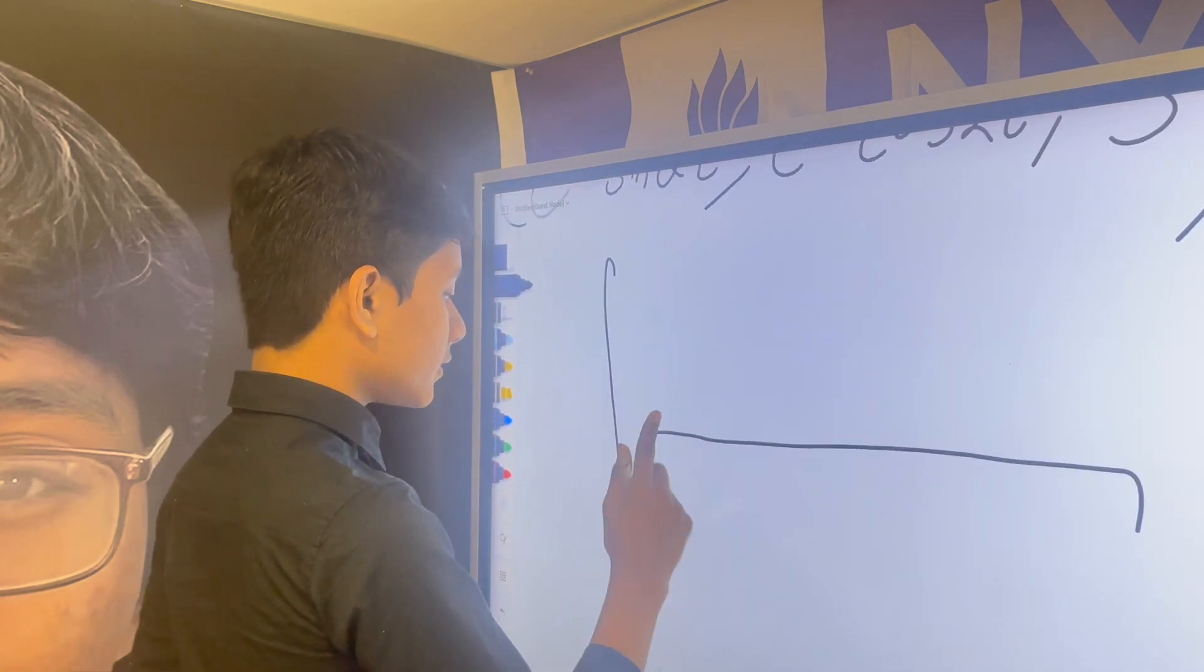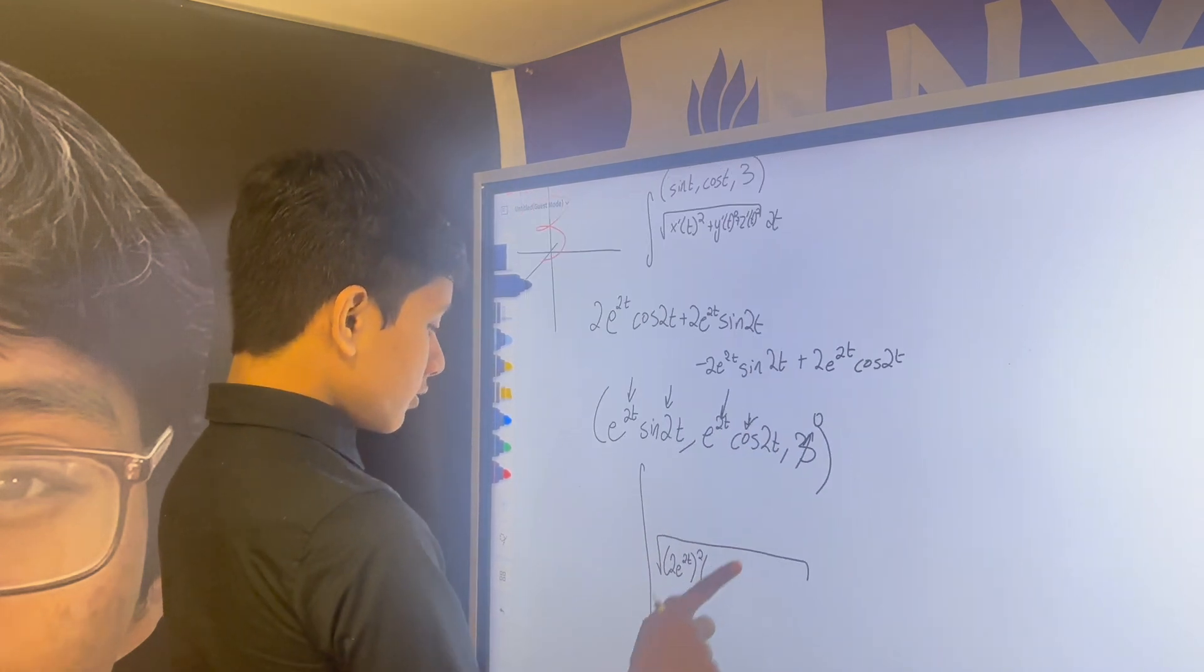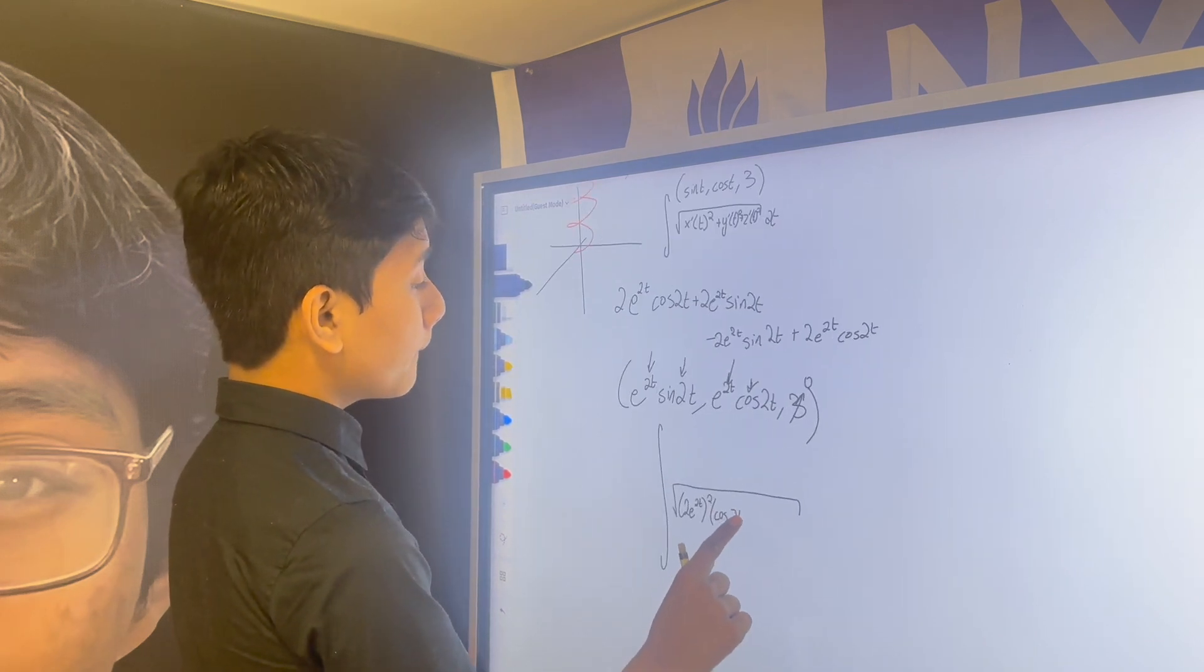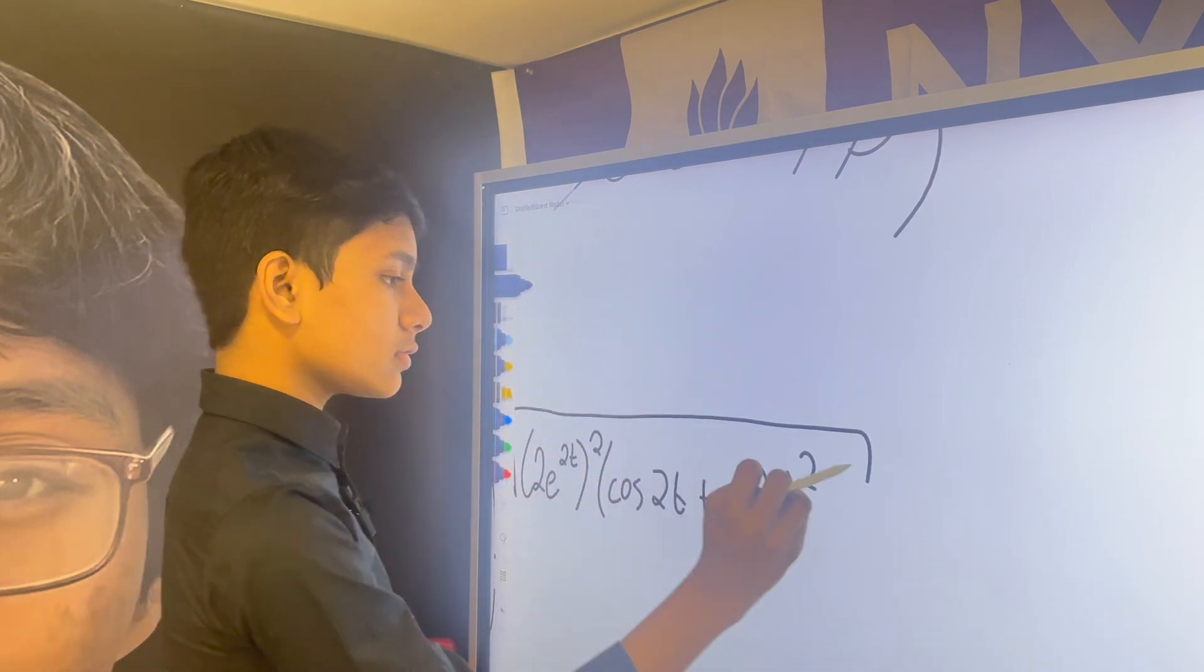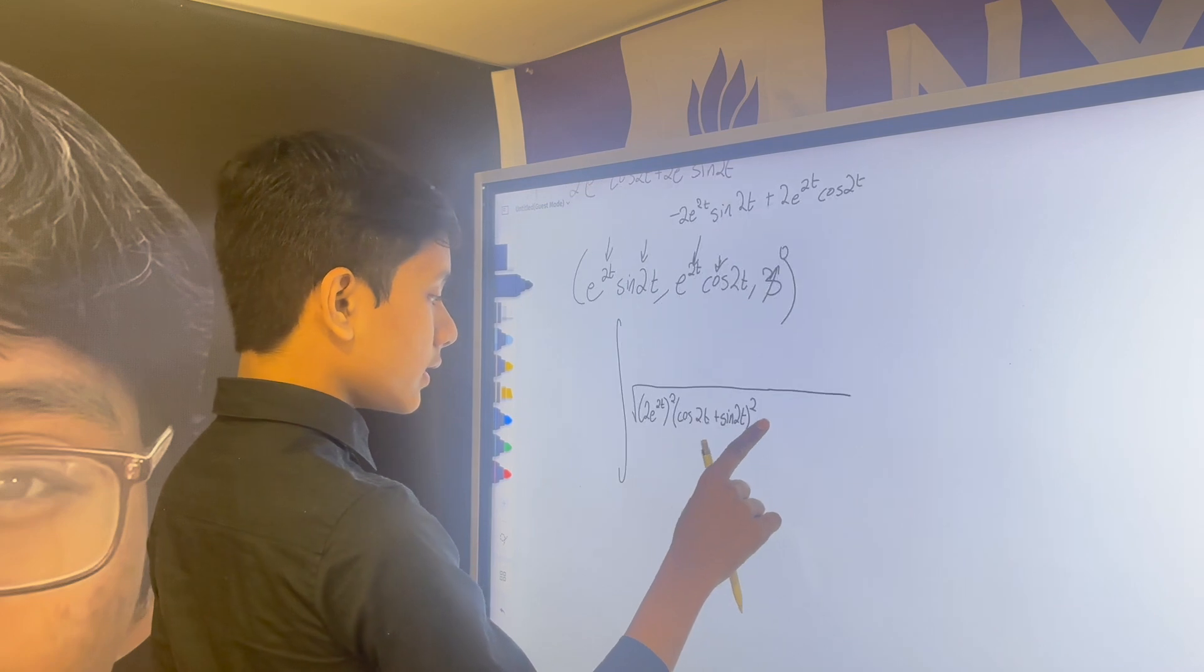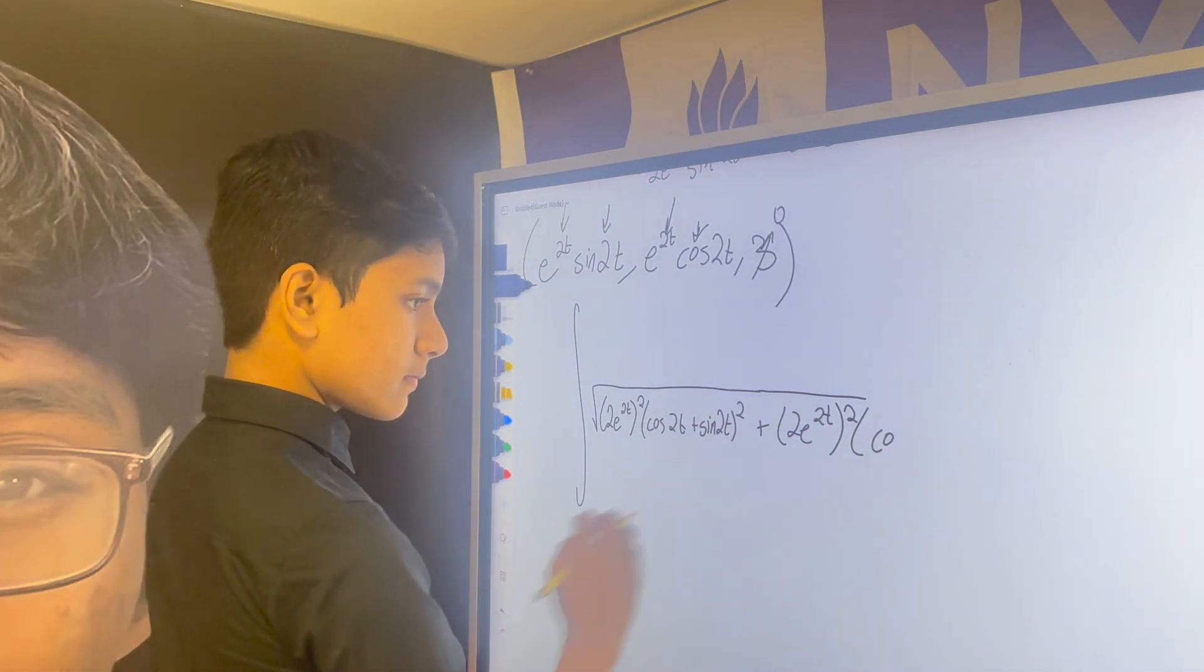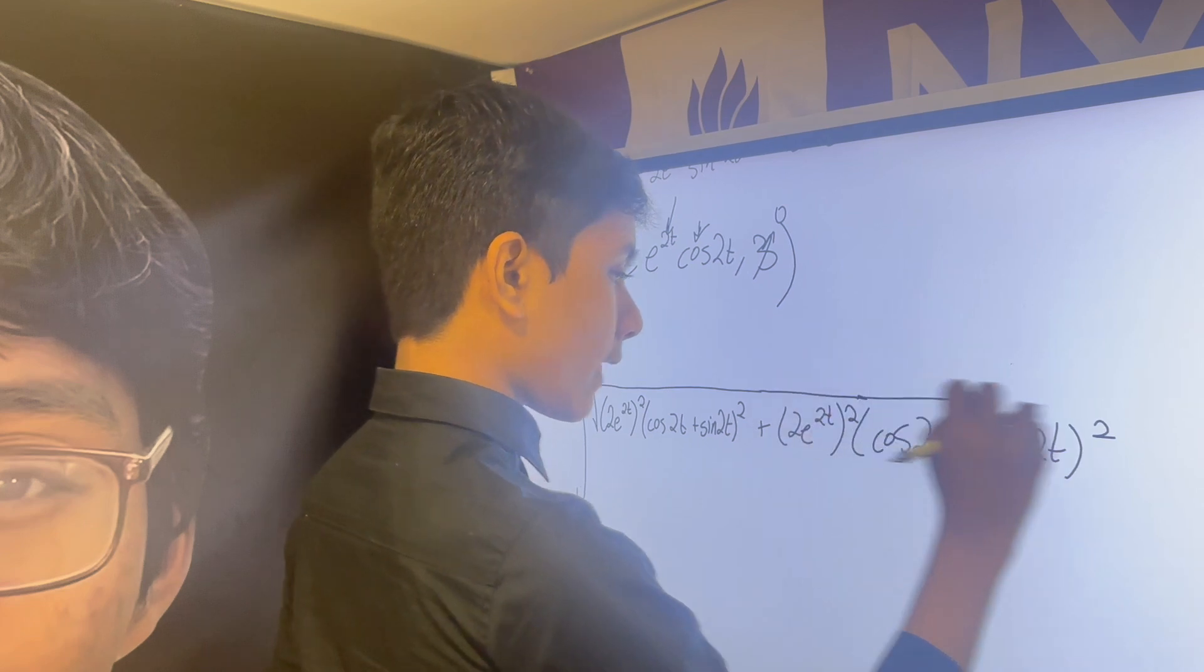So, we have 2e^2t squared. Oh, and this goes to zero when you take the derivative. So, you have 2e^2t squared multiplied by cosine 2t plus sine 2t squared. I'm going to have the longest memory. And then plus 2e^2t squared, cosine 2t minus sine 2t squared and of course plus zero.